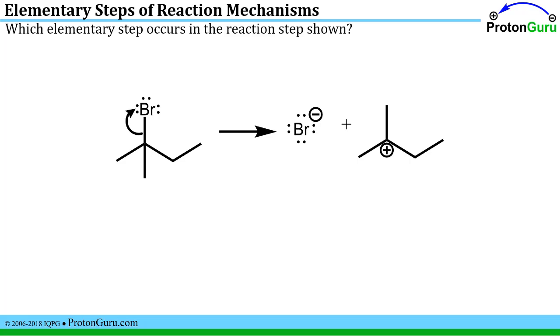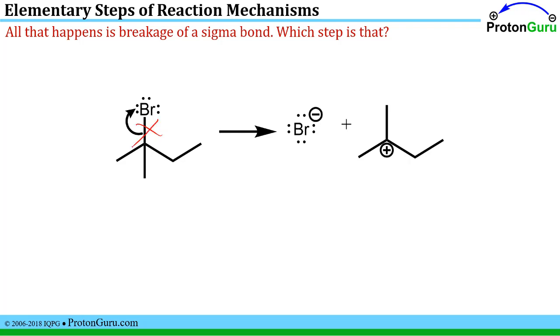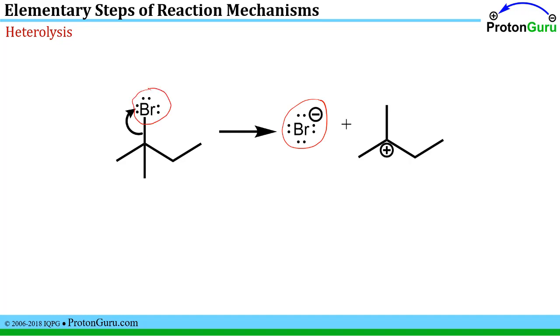The question here is which elementary step occurs in this reaction? Each of these elementary steps is distinguished by what types of bonds are made and or broken. Here, all that's happening is you're breaking this sigma bond. That is a step called heterolysis, where one of the members involved in the bond breakage takes the two electrons for itself.